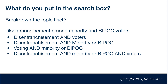Play around with the different aspects of your topic too. A topic about disenfranchisement among minority and BIPOC voters can be searched in the following ways: disenfranchisement and voters; disenfranchisement and minority or BIPOC; voting and minority or BIPOC; disenfranchisement and minority or BIPOC and voters. Research is an iterative process. It is normal to run more than one search and to change your search terms or aspects of your topic. Your topic has more than one dimension — your searches should too. If you are still having trouble finding articles, please reach out to a librarian for help.